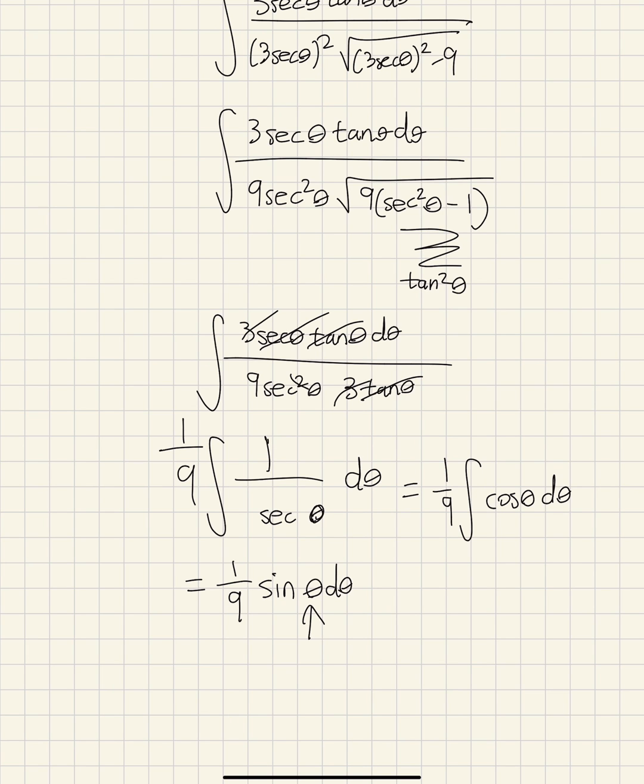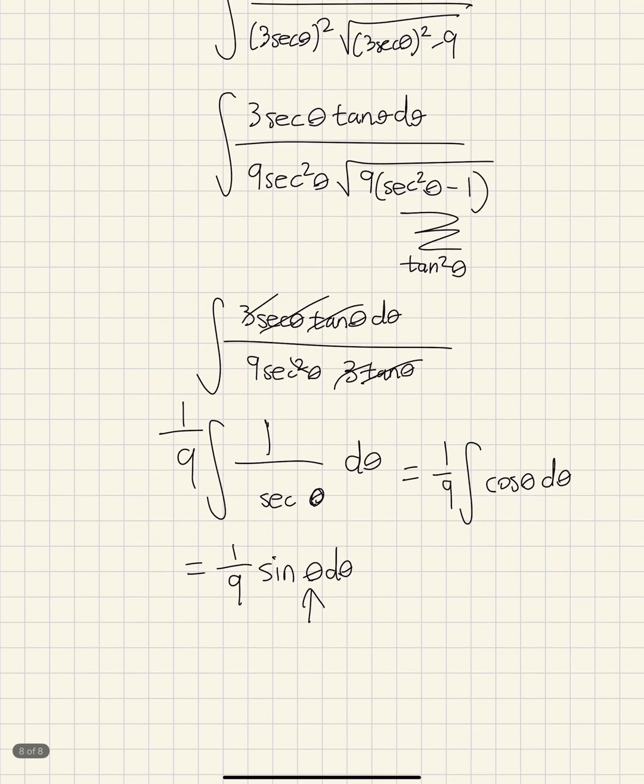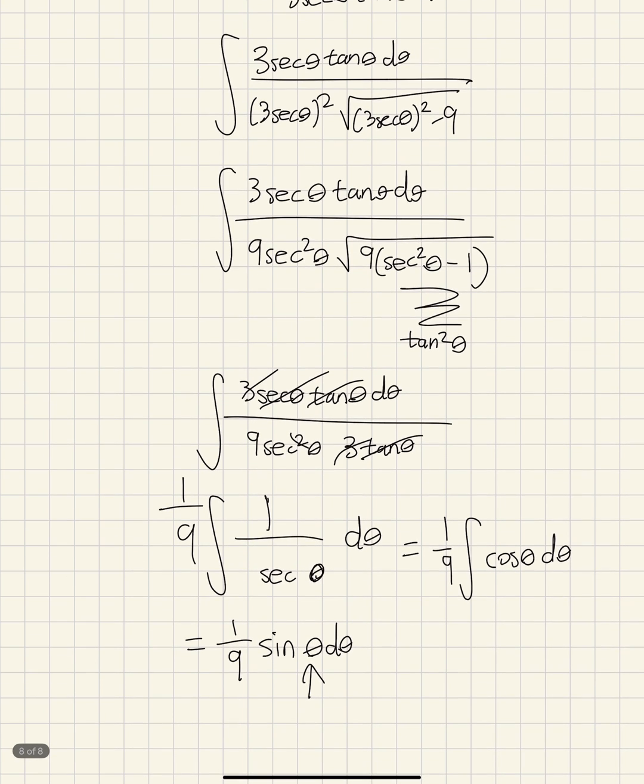But we have to replace the theta with the value of sine. We get that from the trig substitution right triangle, which will be seen in the long form video. So be sure to click the long form video. You would get 1 over 9 square root x squared minus 9 over x plus C. And that is your answer.